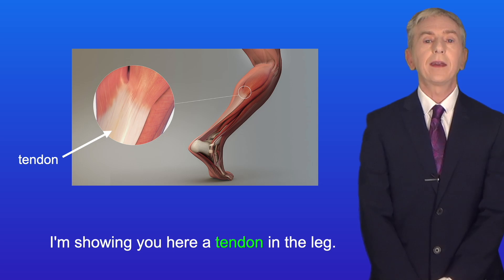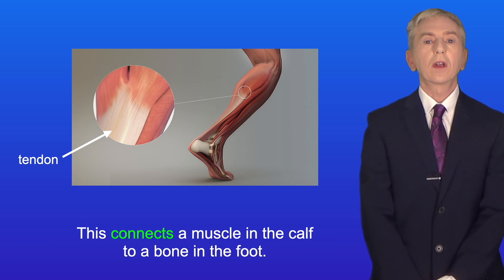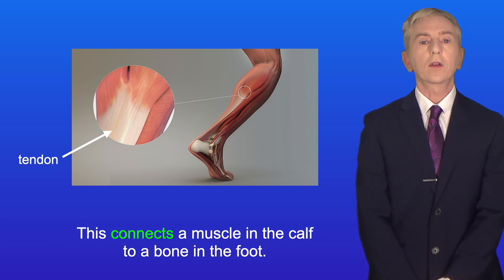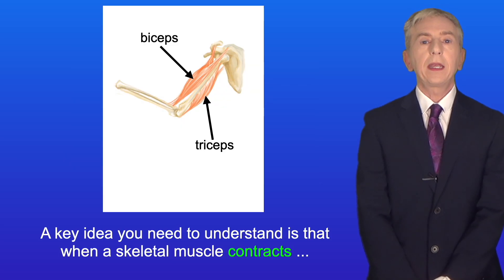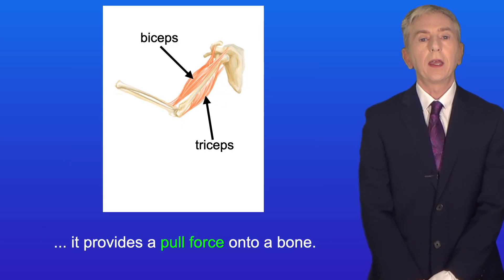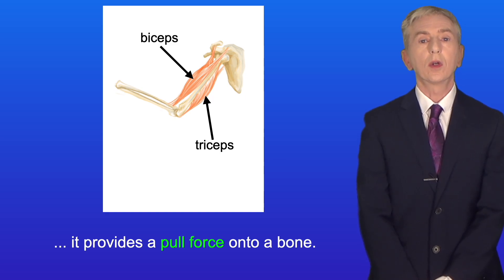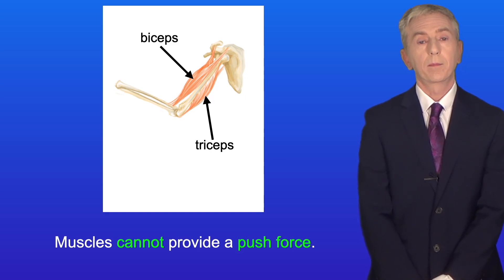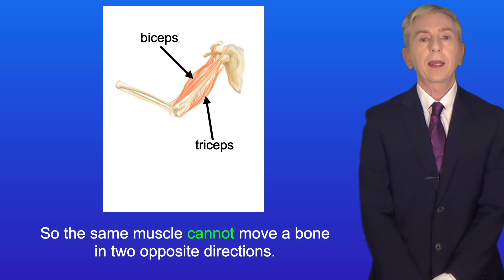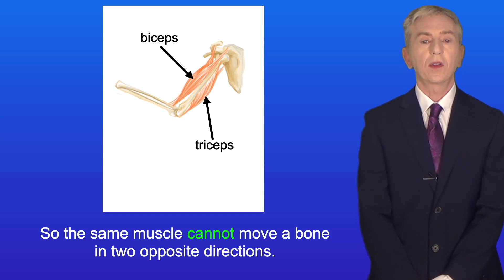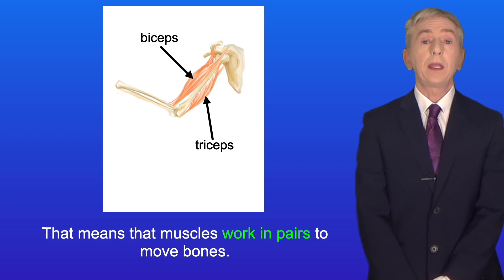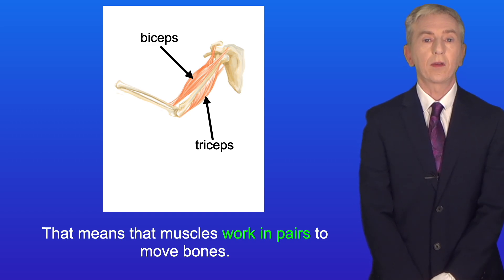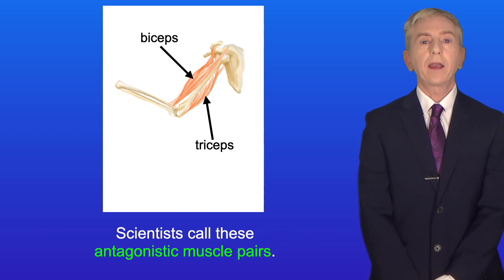Here is a tendon in the leg that connects a muscle in the calf to a bone in the foot. A key idea is that when a skeletal muscle contracts, it provides a pull force onto a bone. Muscles cannot provide a push force, so the same muscle cannot move a bone in two opposite directions. That means that muscles work in pairs to move bones, and scientists call these antagonistic muscle pairs.